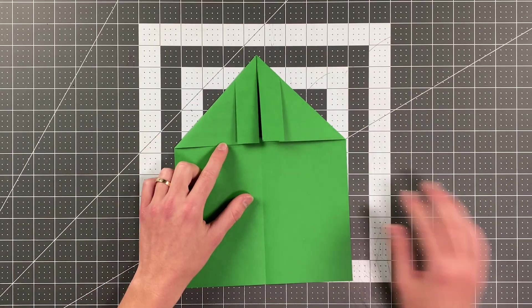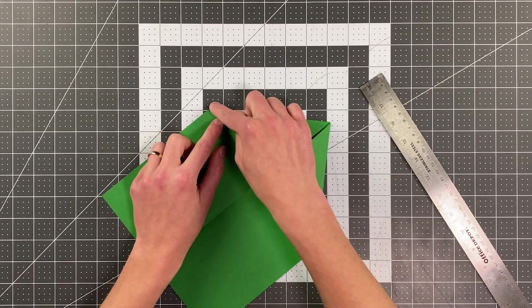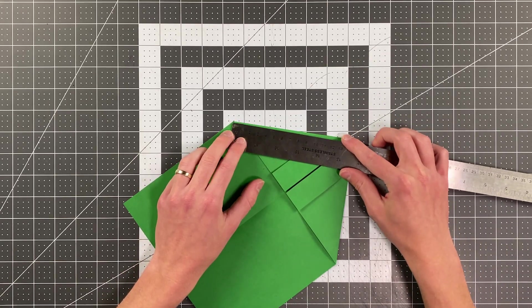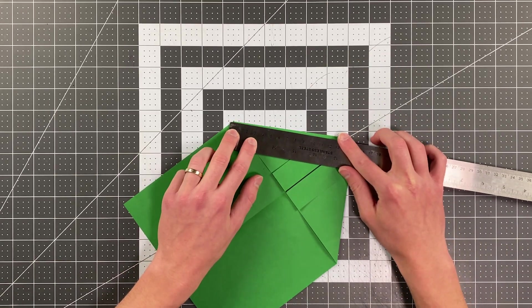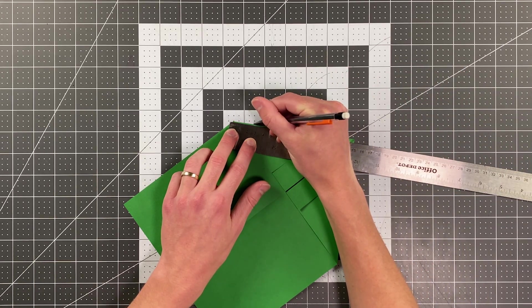Now, in the next step, we are measuring once again. You're going to measure along this edge here from that corner right there. And you're measuring two and a half centimeters again. And you're just making a little mark at that point.